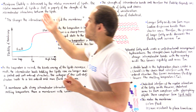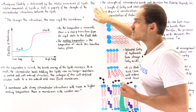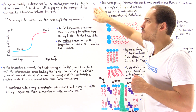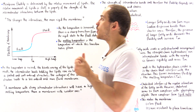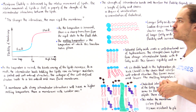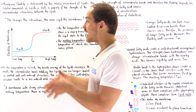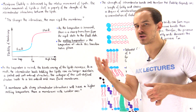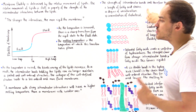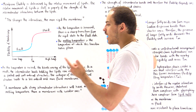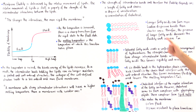Membrane fluidity is determined by the relative movement of lipids and other molecules, and that movement is determined by the strength of the intermolecular interactions. Three things determine the strength of those interactions: number one is the length of fatty acid chains, and number two is the degree of unsaturation — how many double bonds exist in the hydrocarbon chains of the fatty acids.